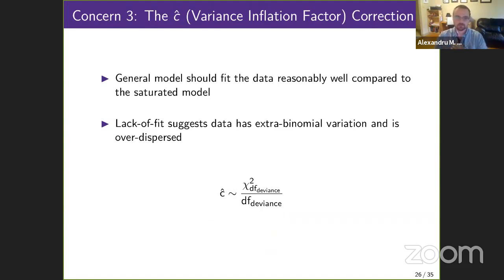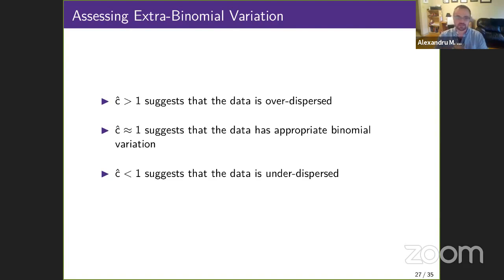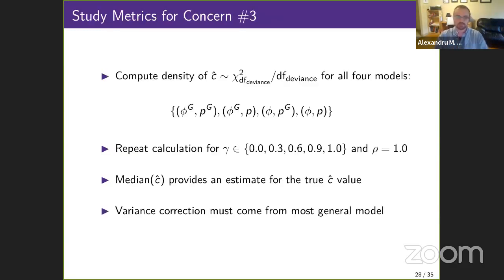In the final case, we're going to look at the c-hat correction, which is the deviance between the most general model in our hierarchy and a saturated model divided by the degrees of freedom. As a reminder, if the c-hat is well above one, then the data has overdispersion, which suggests that there's extra binomial variation in the data, and that's usually accounted for with quasi-likelihood methods or a model improvement. In our case, we studied c-hat by simulating its distribution and then computing the median for every model in our hierarchy across a grid of increasing survival correlations. Note that we use perfect recapture correlation throughout in order to investigate the most extreme case.